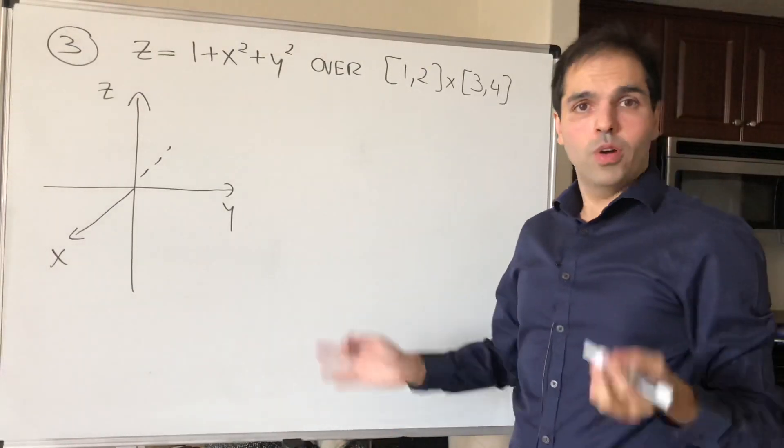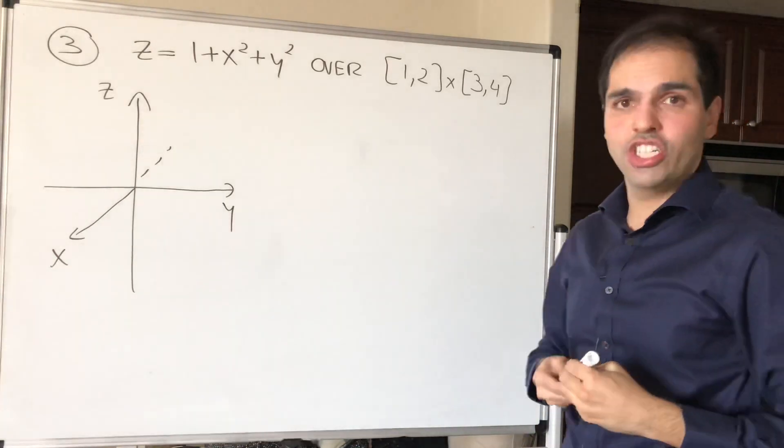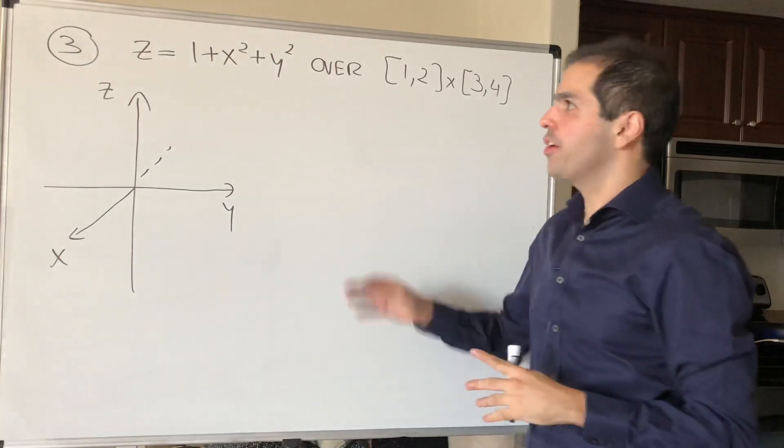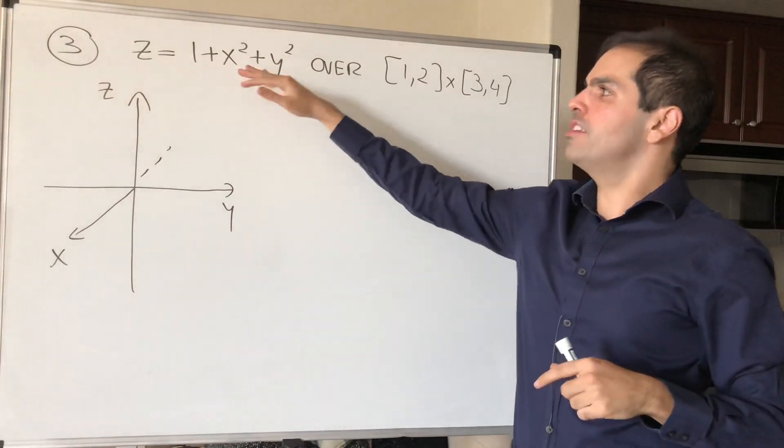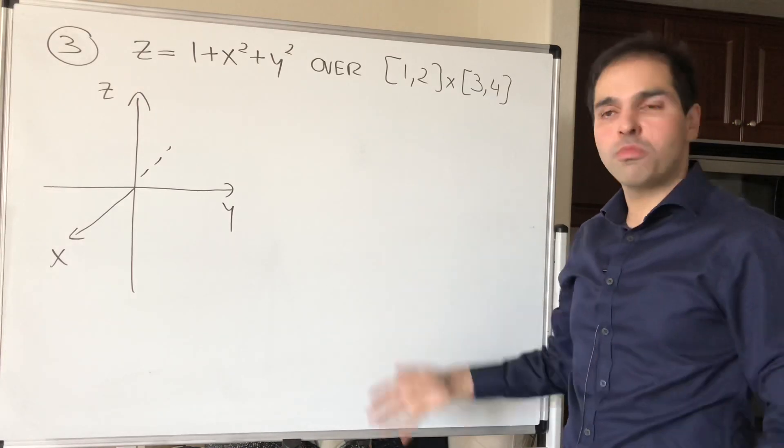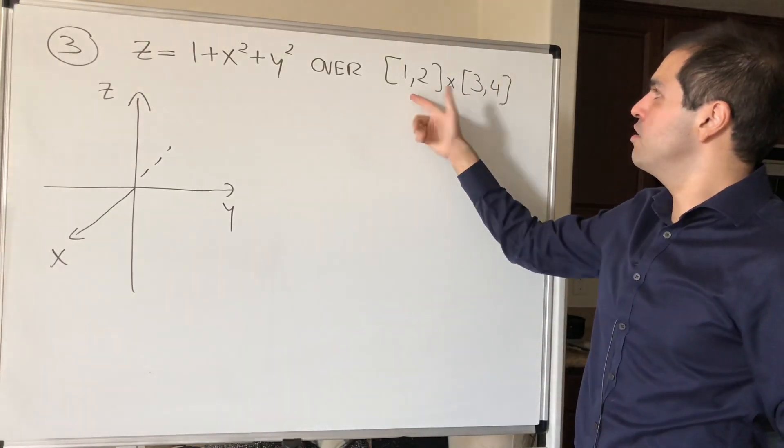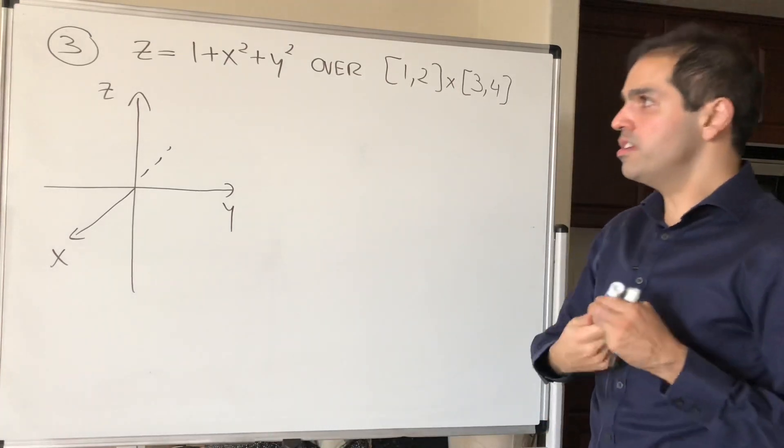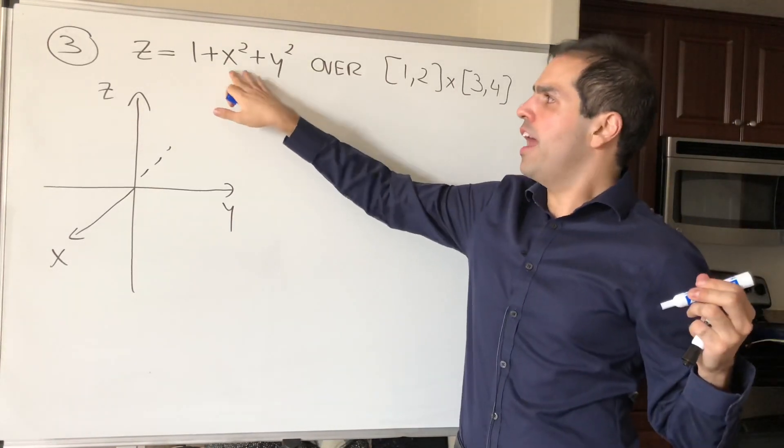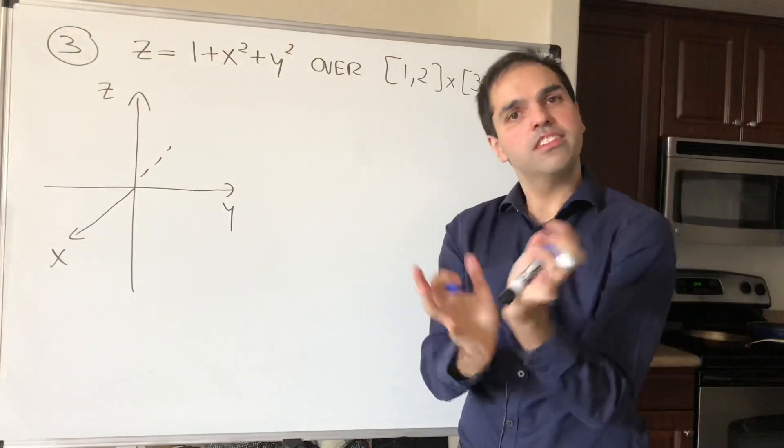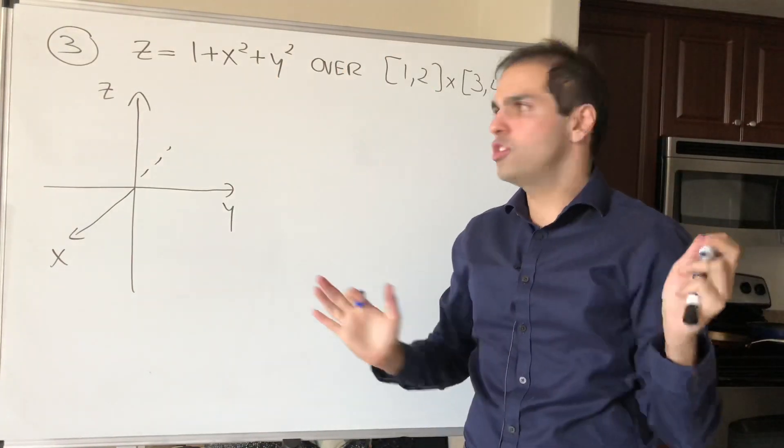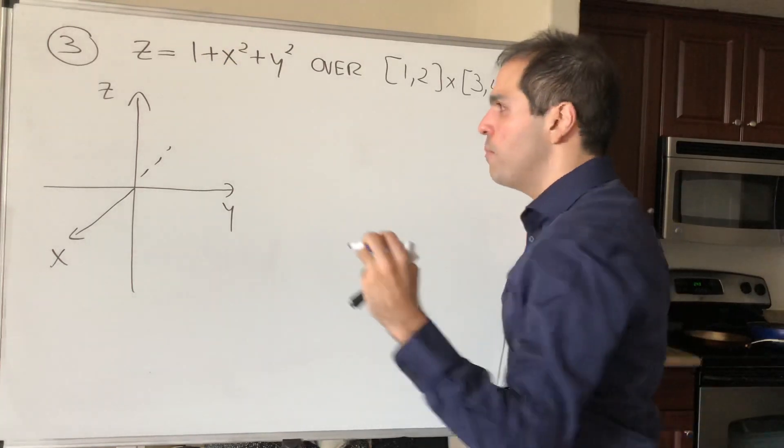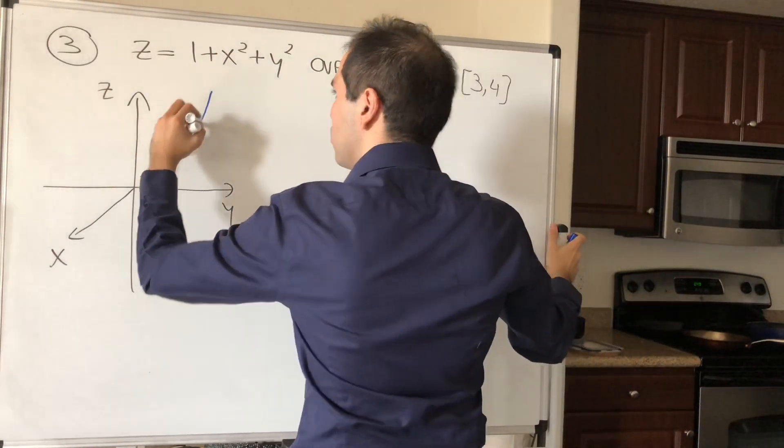Next one. All right, next one. What happens to graph of functions? It turns out in this case, the parametric equations are much easier. So for instance, what about z equals 1 plus x squared plus y squared, over this little square, in this case, 1, 2, 3, 4. So what this looks like, remember, x squared plus y squared, it's this 3D parabola, so this paraboloid, and with this plus 1, you shift it up by one unit, so it looks something like that.